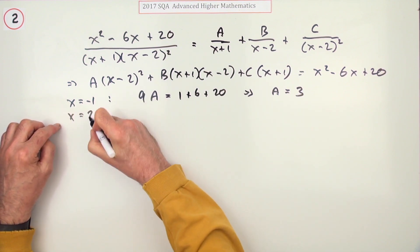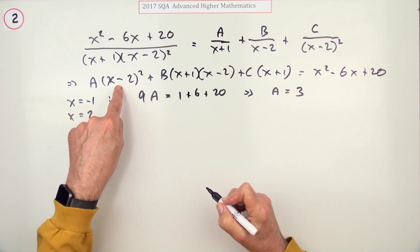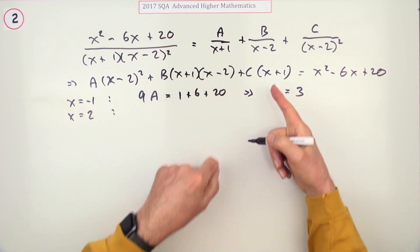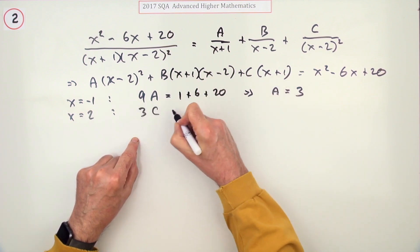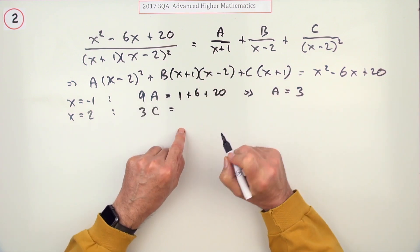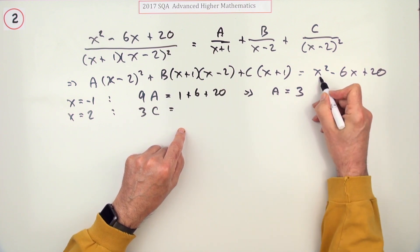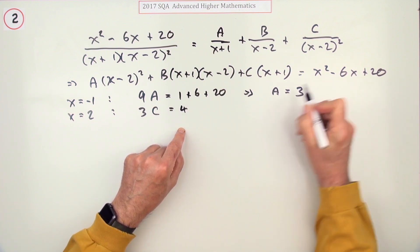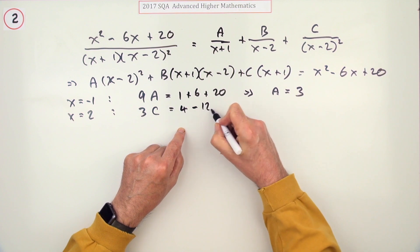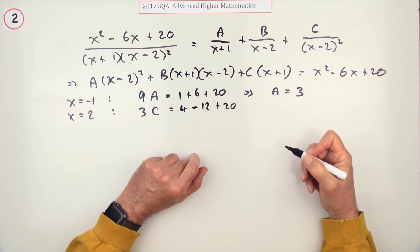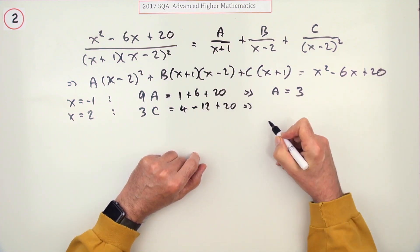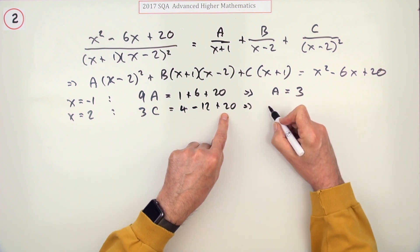Another knockout value would be 2. When x is 2, that'll disappear and that'll disappear, and you'll have 3 lots of C. When x is 2, you'll have 4 - 12 + 20. Well, that means you've got 8 away from 20, which is 12, which means that when you divide it by 3, C is going to be 4.